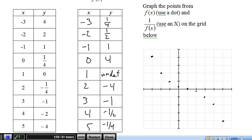I've now graphed all of the original f(x) points. And now with red x's I'm going to put on the reciprocal — the 1 over f(x) points. So we've got negative 3, 1 quarter. The first thing you should notice is that because the x stays the same — the x is both negative 3 — these points are directly above or below each other. Our next point: negative 2, 1 half.